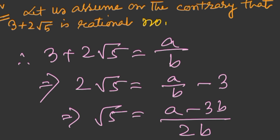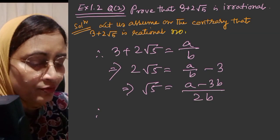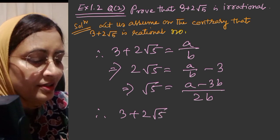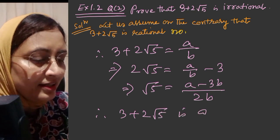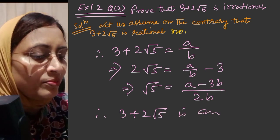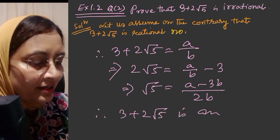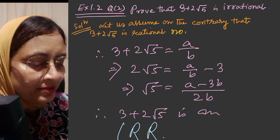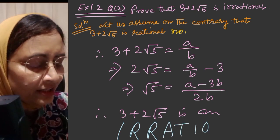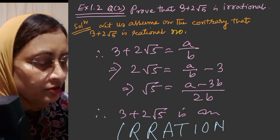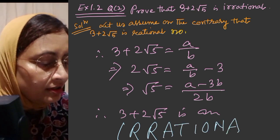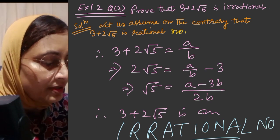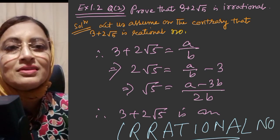Therefore, 3 plus 2 root 5 is an irrational number. Beginning with A and B, we showed it leads to a contradiction, proving that it is indeed an irrational number.